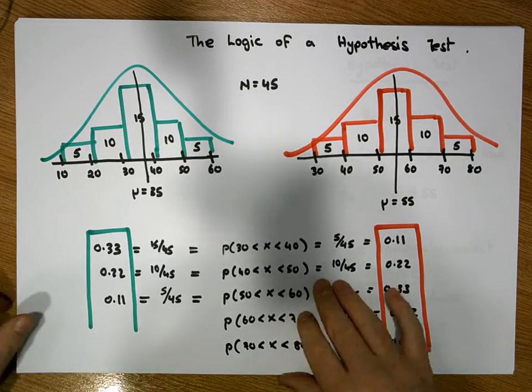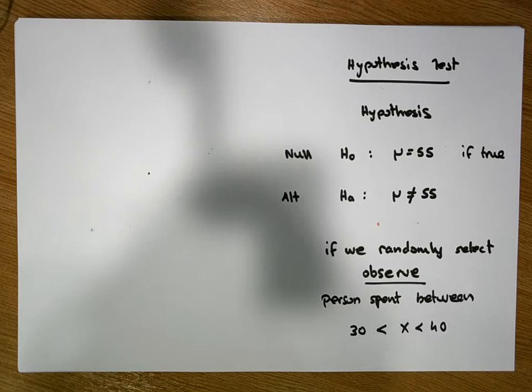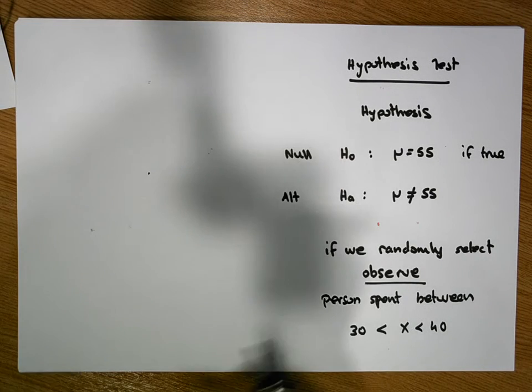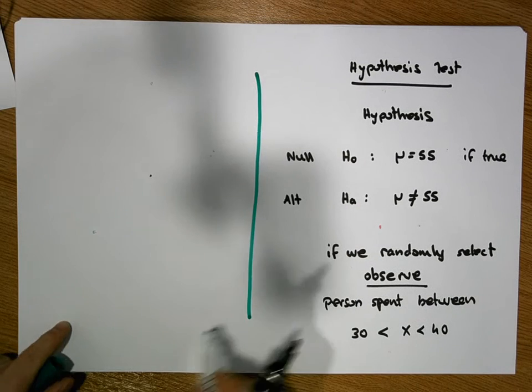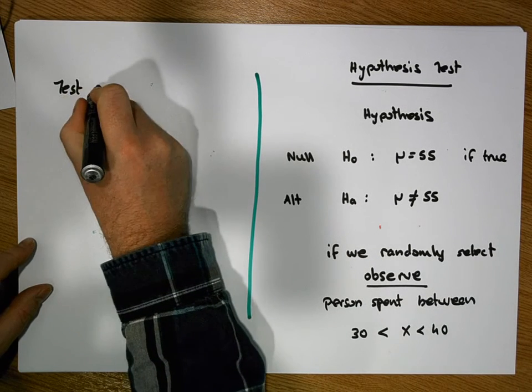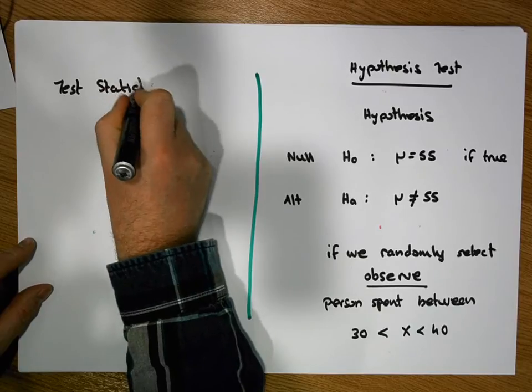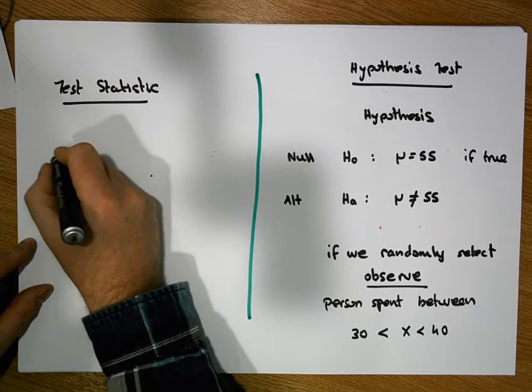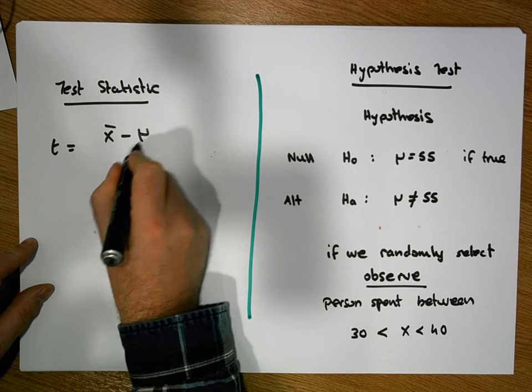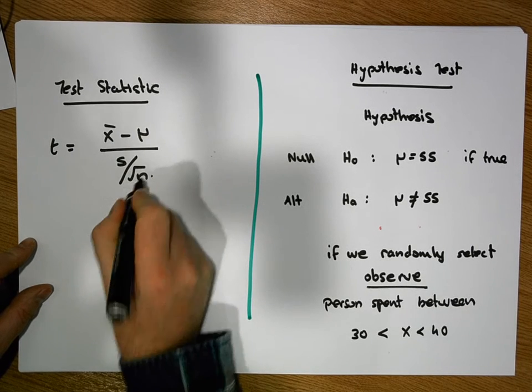And this is where our test statistic comes into play. Our test statistic, and let's just assume that we're dealing with a t test. So if we're dealing with a t test, our test statistic is t equals x bar minus mu over s over the square root of n.